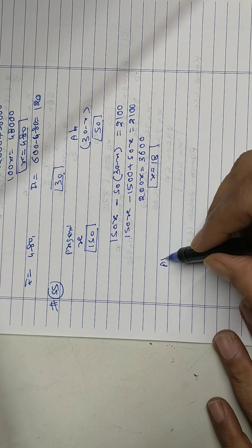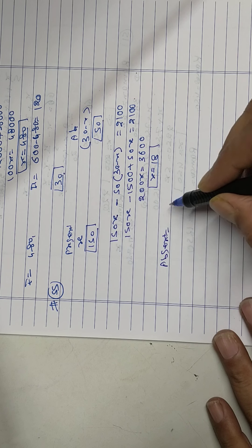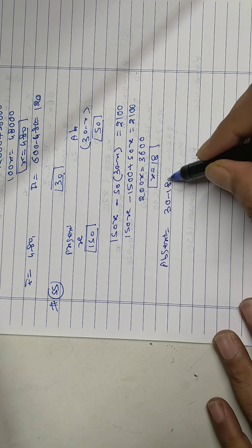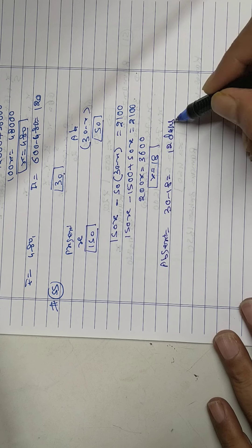So he was absent for 30 minus 18 equals to 12 days.